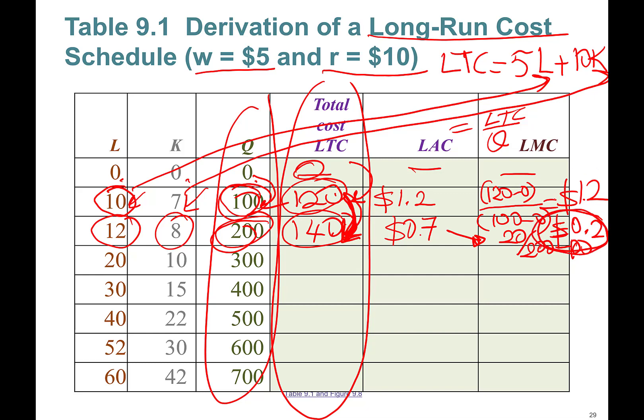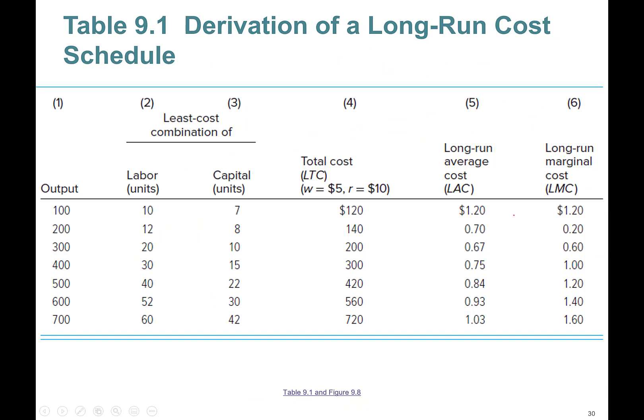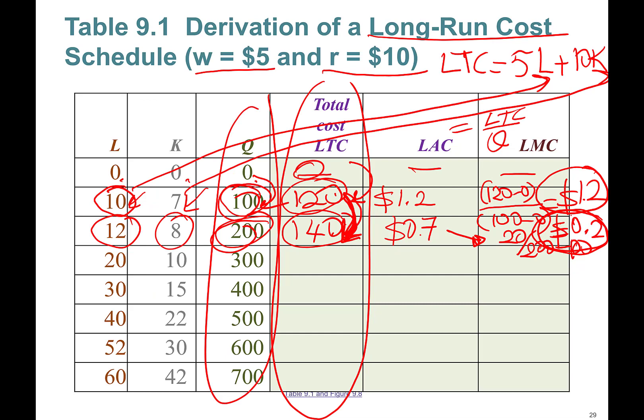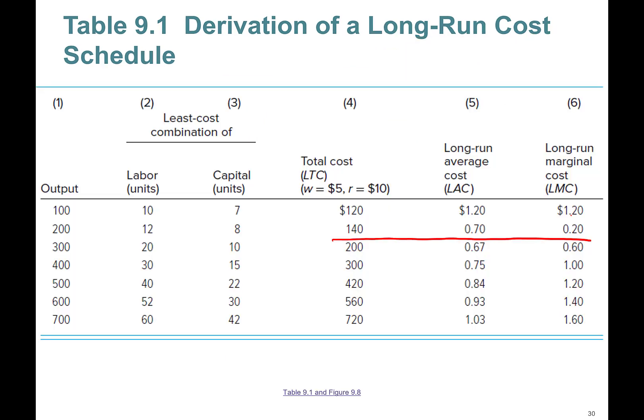Producing one more unit here at the 200-unit level is only 20 cents. For the 100-unit level it was $1.20. Continue this table, and it's given here. Thankfully, I got these numbers right.